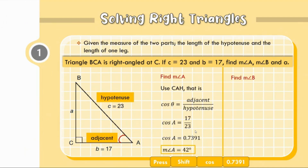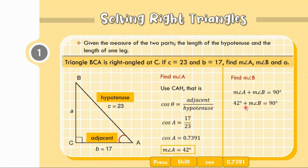Now let us find the measure of angle B. We have two ways. We can use sine B, which equals opposite over hypotenuse where 17 is opposite and 23 is hypotenuse. But since we already know the measure of angle A, and measure of angle A plus measure of angle B equals 90 degrees, let us substitute: 42 plus measure of angle B equals 90 degrees. Using the addition property of equality, measure of angle B equals 90 minus 42, which is 48 degrees.